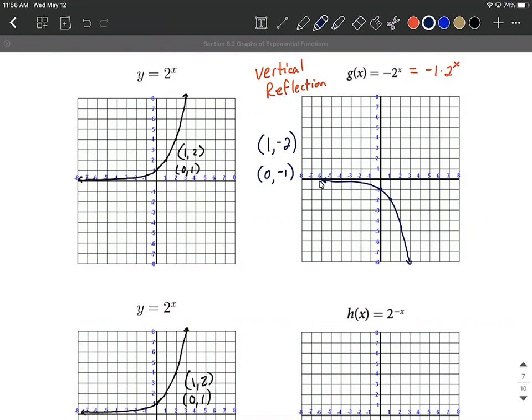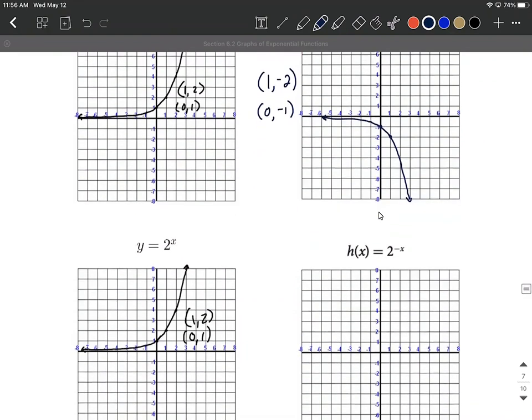Now the horizontal asymptote is still at the x-axis when y equals 0. As we approach that, as we go off to the left-hand side, the difference is before we were approaching it from above, now we're approaching from below. Domain is still negative to positive infinity. We can plug in any x value we want in this.